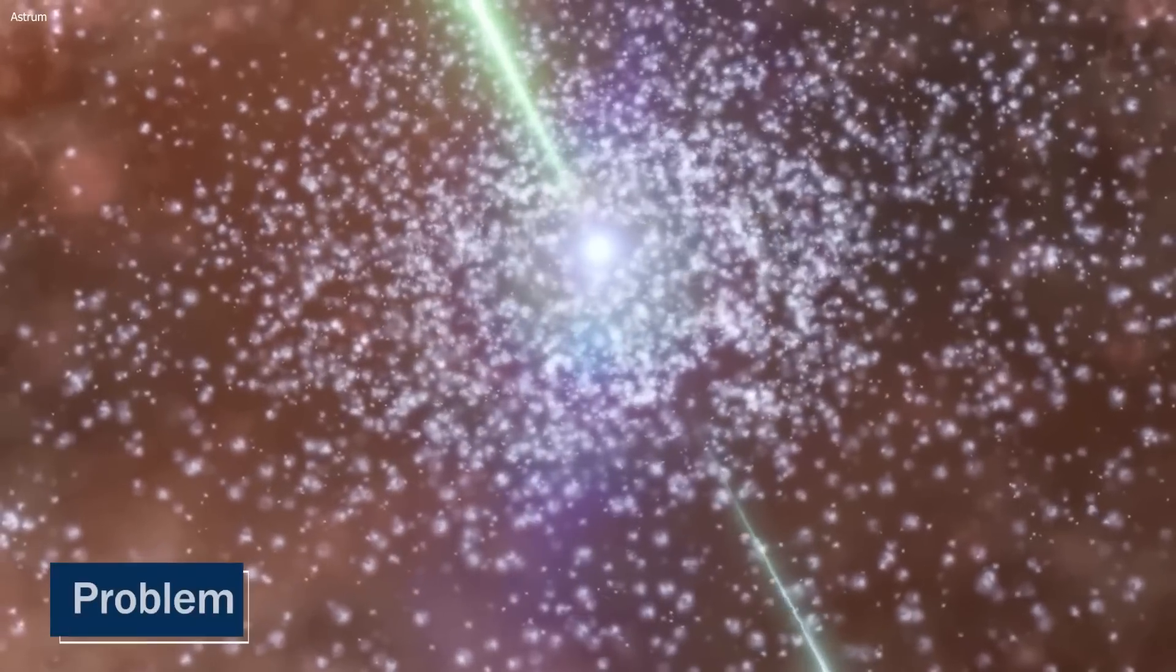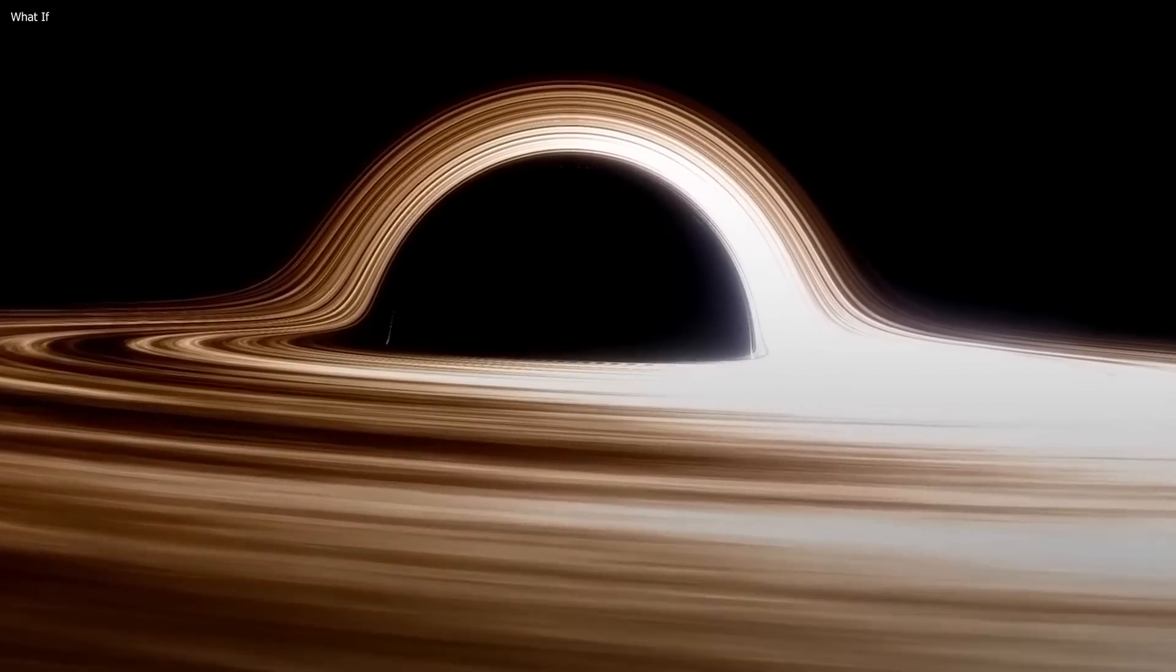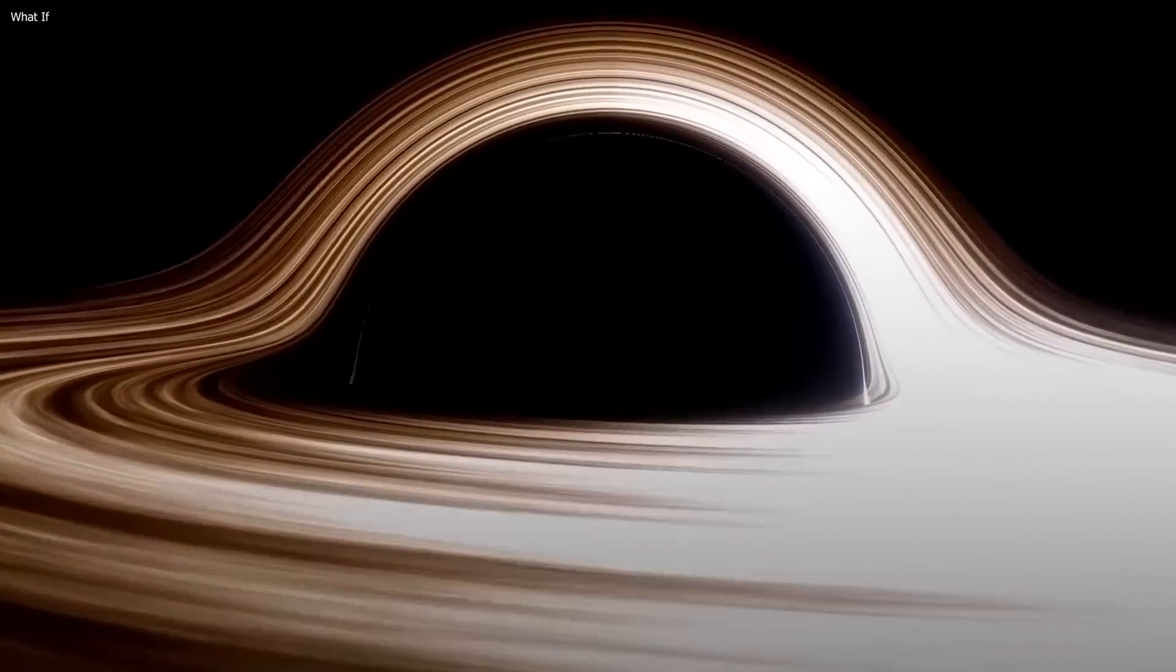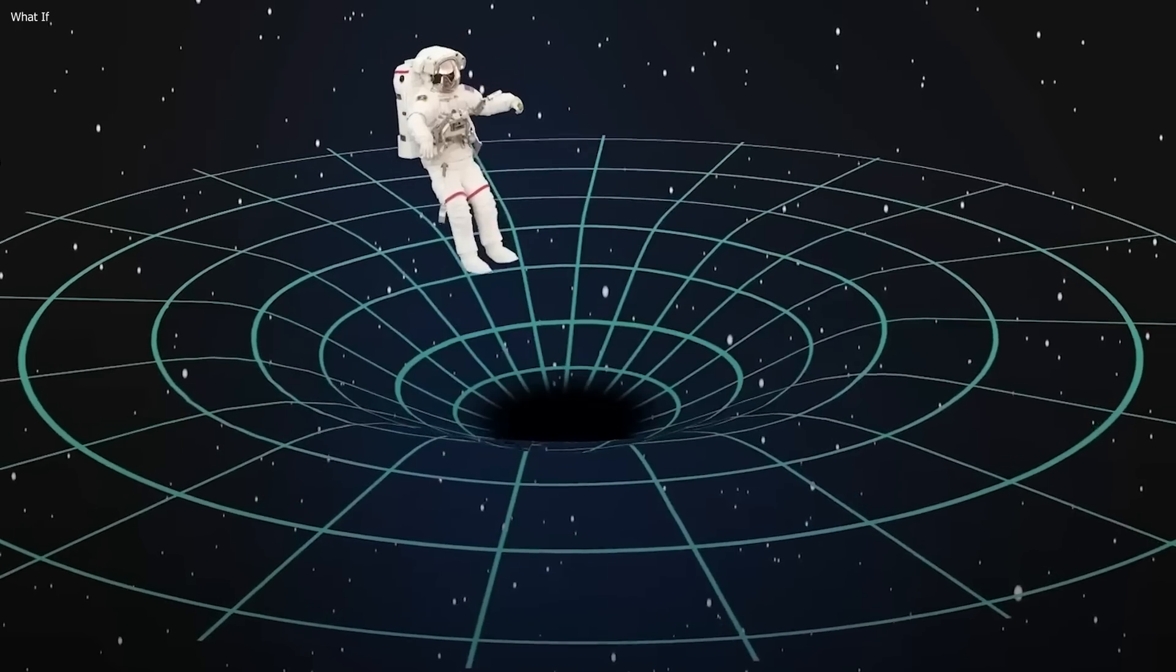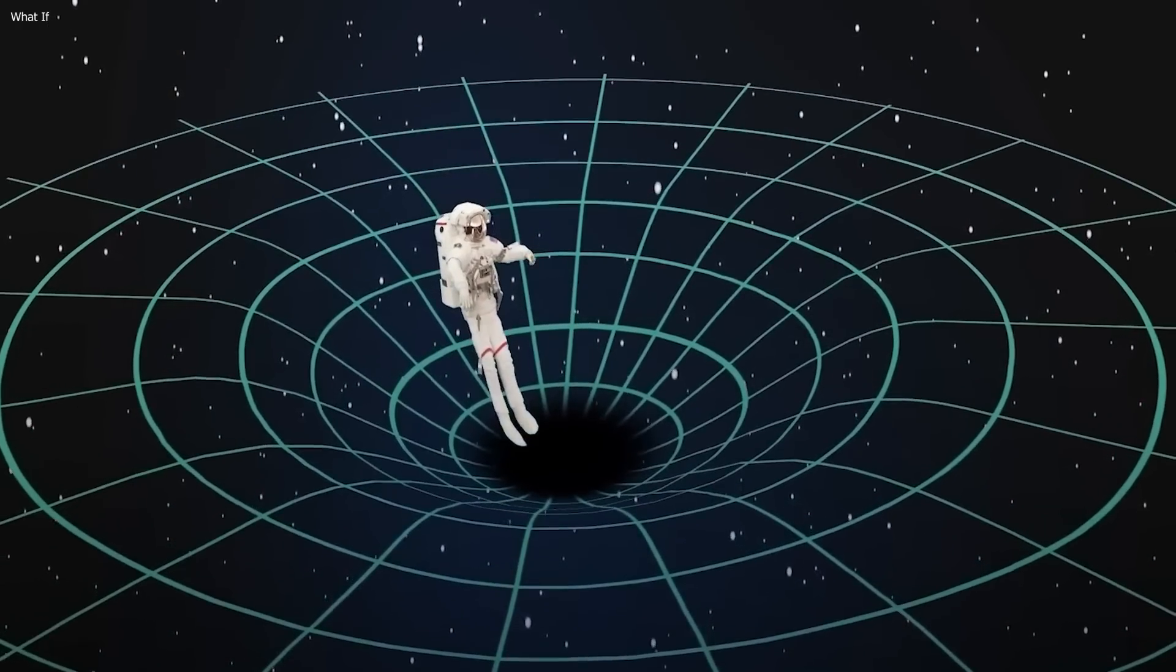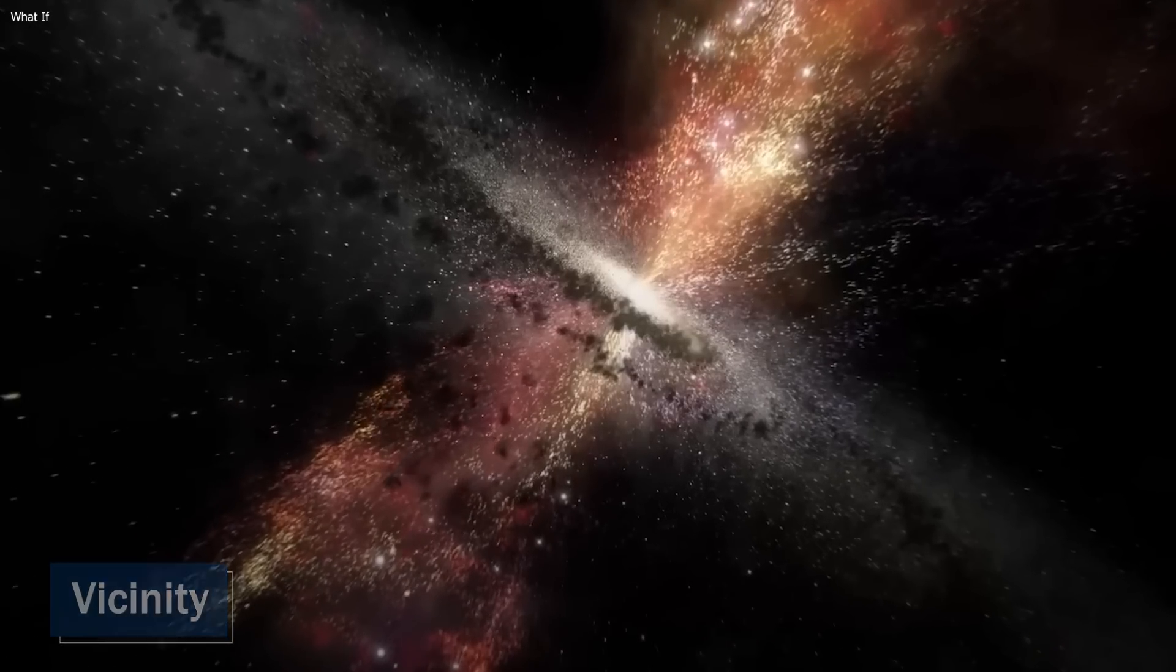But the problem of no one actually being able to get close to one still stands. How do you study something you can't get a good look at? Here you might ask why. Why can't someone actually go inside a black hole to gather information? What would happen if anyone got too close? To answer this question, we must first understand what happens in the immediate vicinity of a black hole.